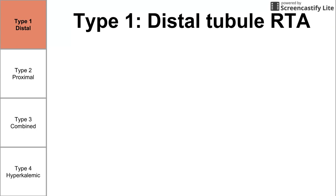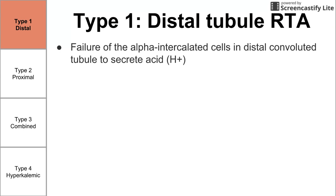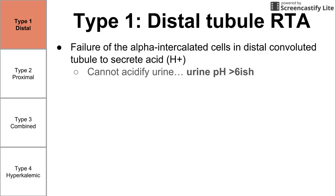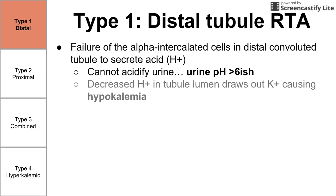Type 1 is distal tubular RTA. It is related to the failure of the alpha intercalated cells in the distal convoluted tubule to secrete acid. These cells' job is to pump out H ions, and when they can't do that, it's referred to as distal tubular RTA. If you can't acidify the urine, you're going to have a hard time making the urine pH low, so with type 1 RTA we see a urine pH greater than 6. There's also decreased hydrogen ions in the tubule lumen, which is going to cause K ions, the potassium ions, to be drawn out toward the negative charge of that lumen.